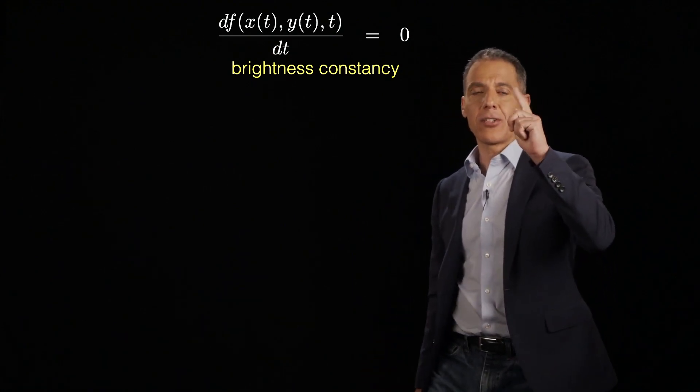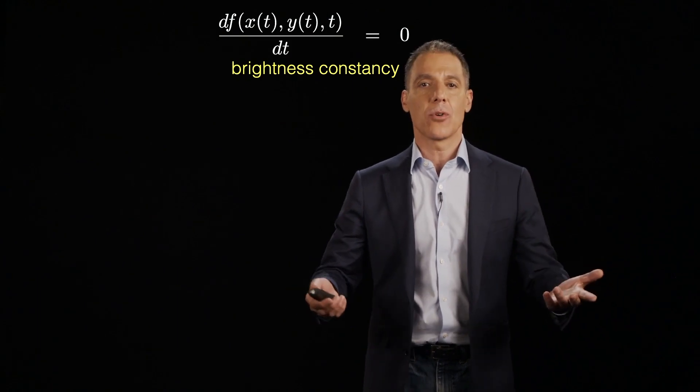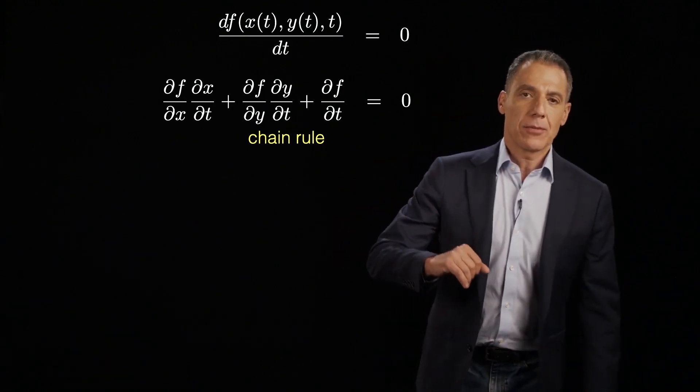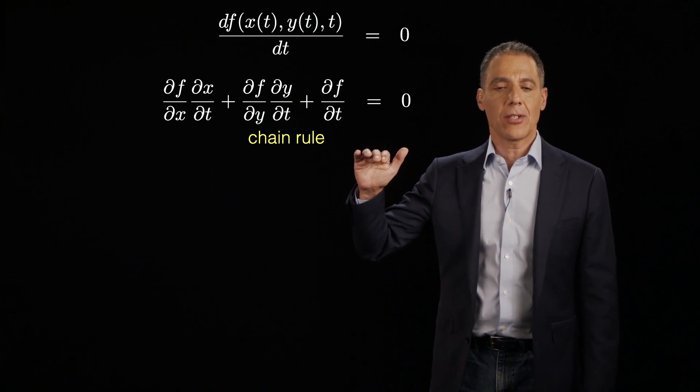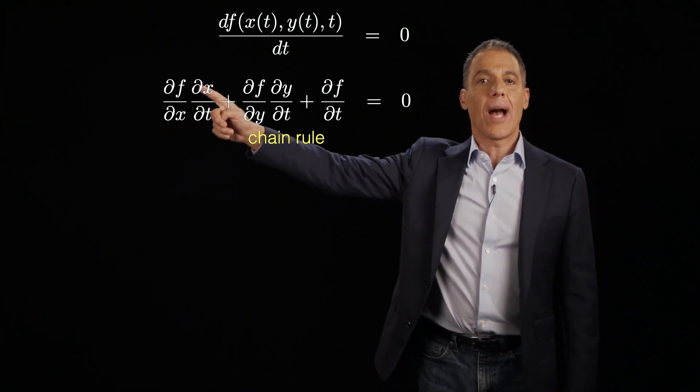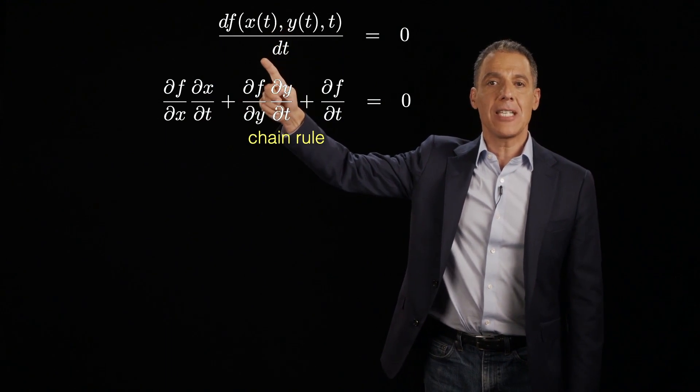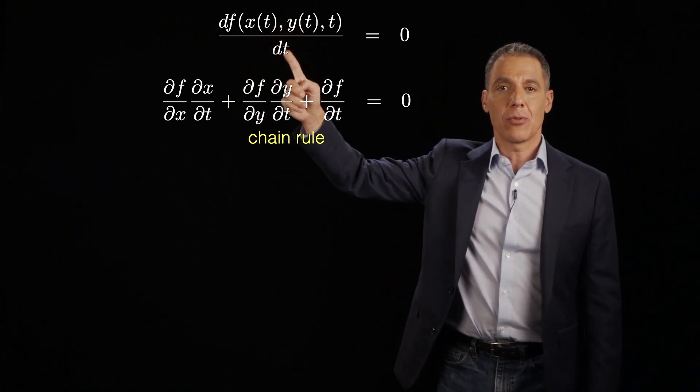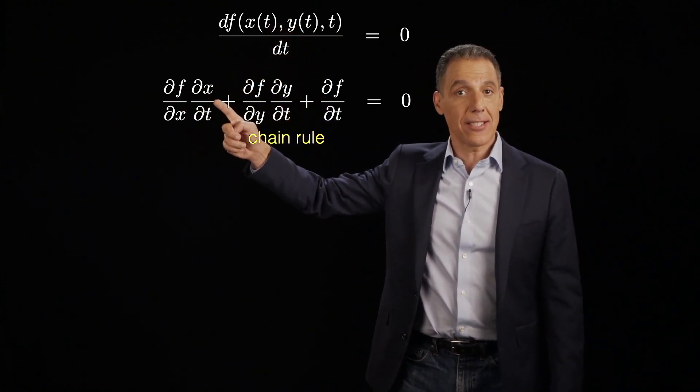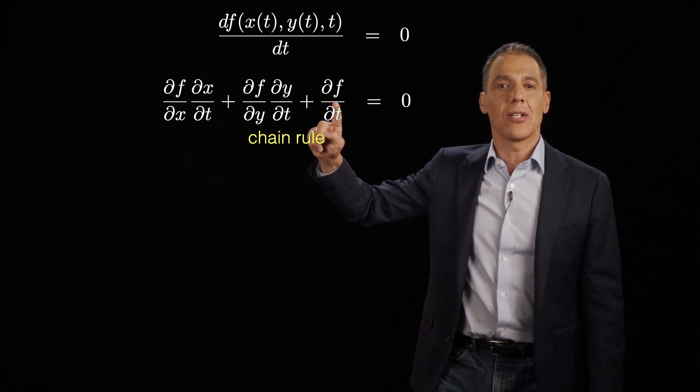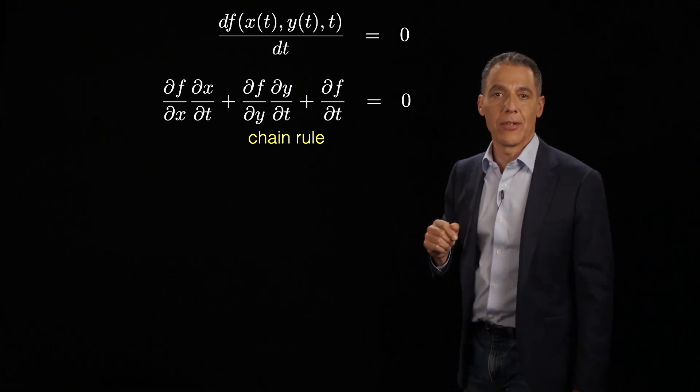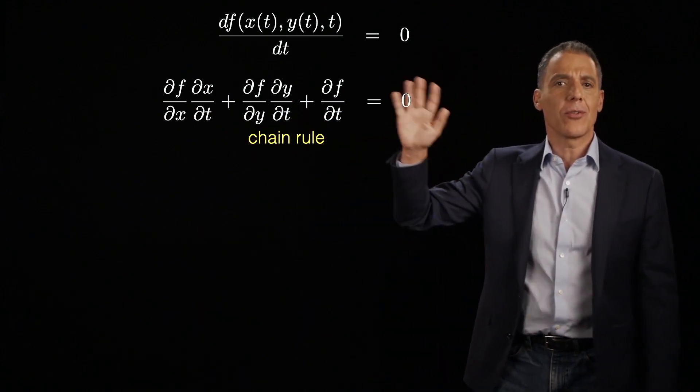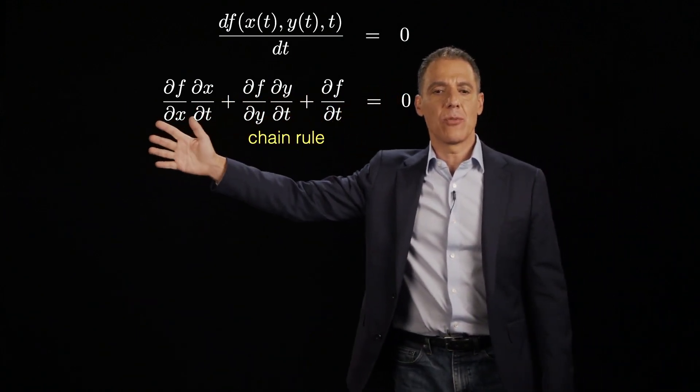So, let's see how we go from this initial assumption to a mechanism for estimating motion from a series of frames. Go back to multi-dimensional, multi-parameter differentiation, calculus. And let's apply the chain rule. Why the chain rule? I'm differentiating f with respect to t, but x and y also depend on t. So, the chain rule says that the full derivative of this with respect to t is df/dx dx/dt plus df/dy dy/dt plus df/dt, which is the partial derivative with respect to time. And this, of course, is still equal to zero. That's my brightness constancy assumption. So, I've just applied the chain rule here to get the derivatives.